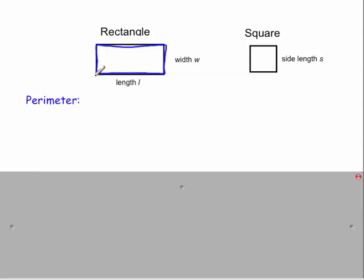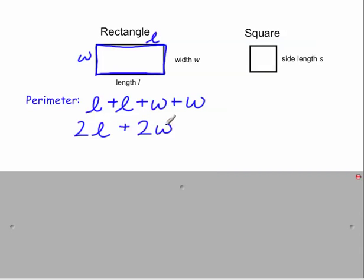So for a rectangle, you can think of it as a length plus a length plus a width plus a width, which simplifies to 2 times the length plus 2 times the width.